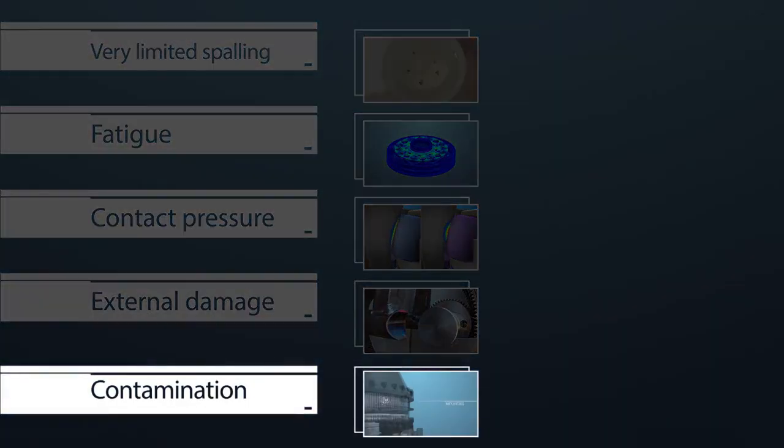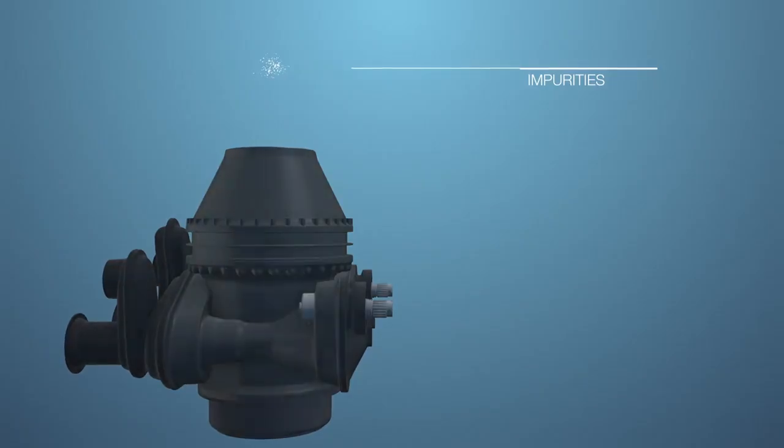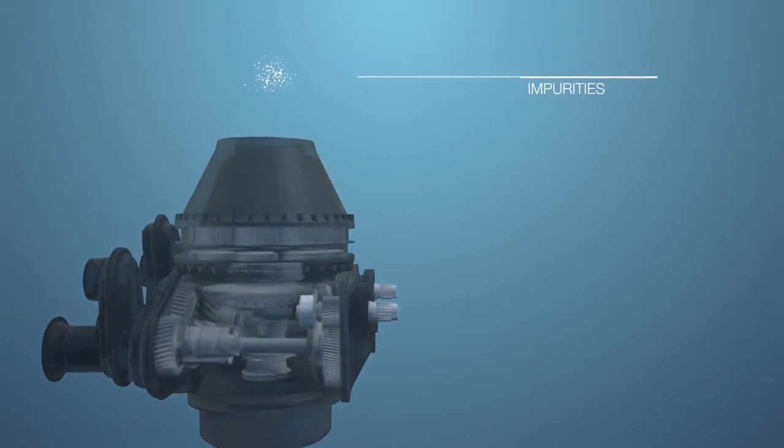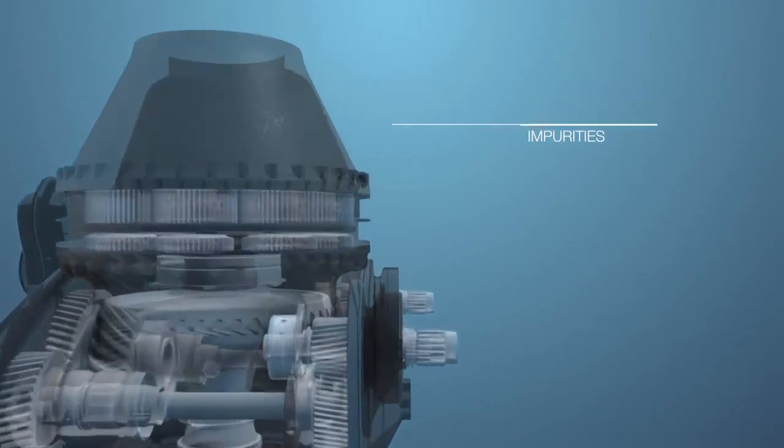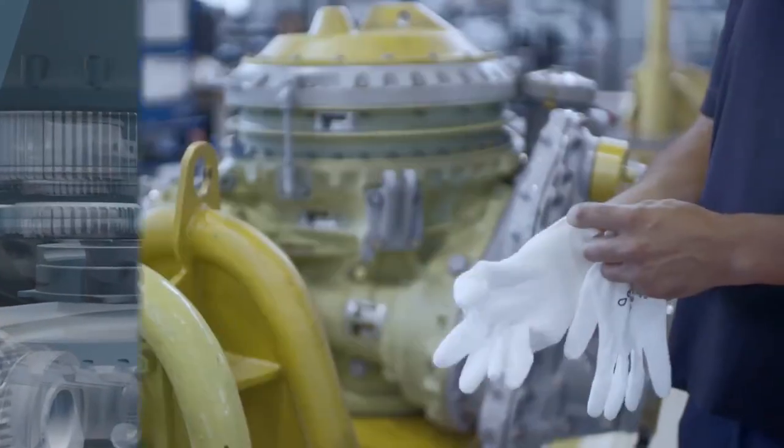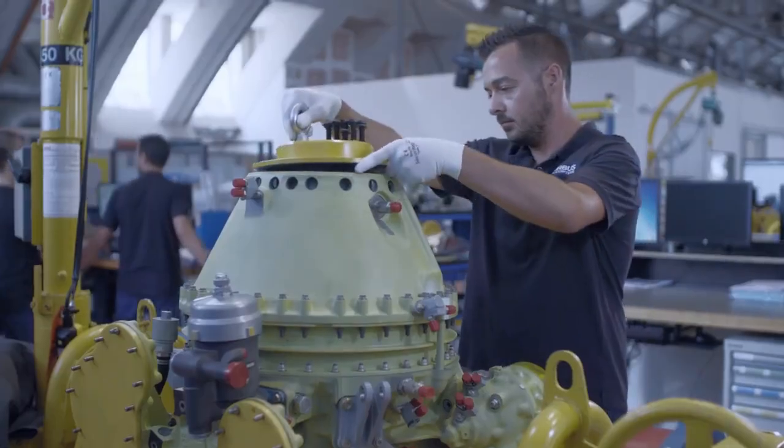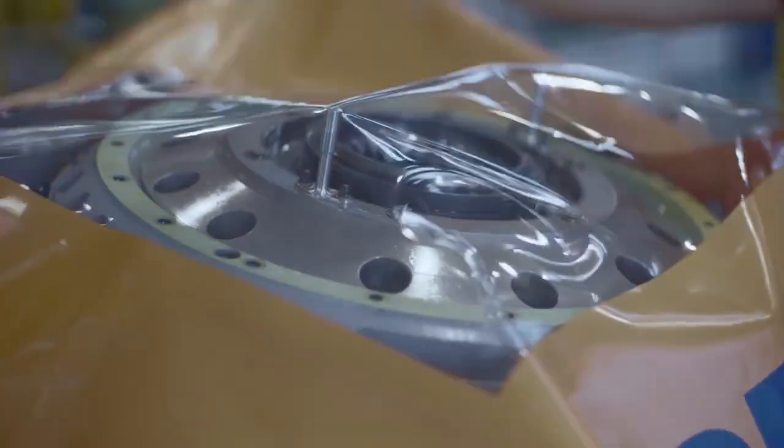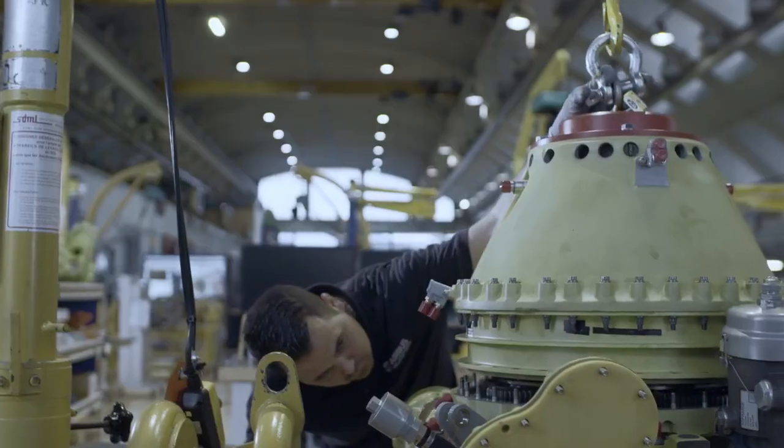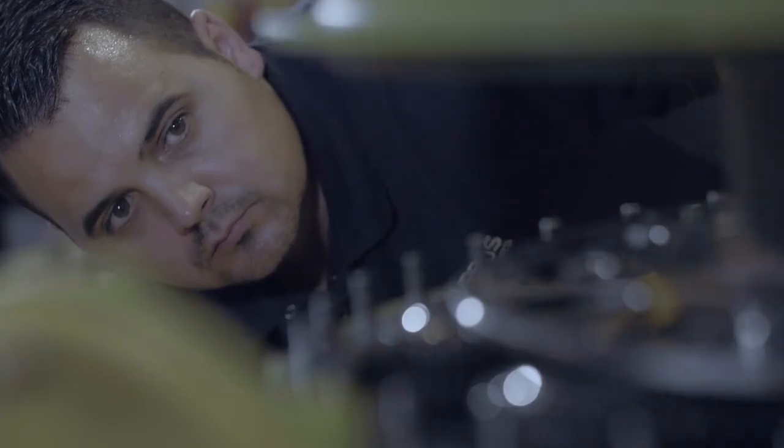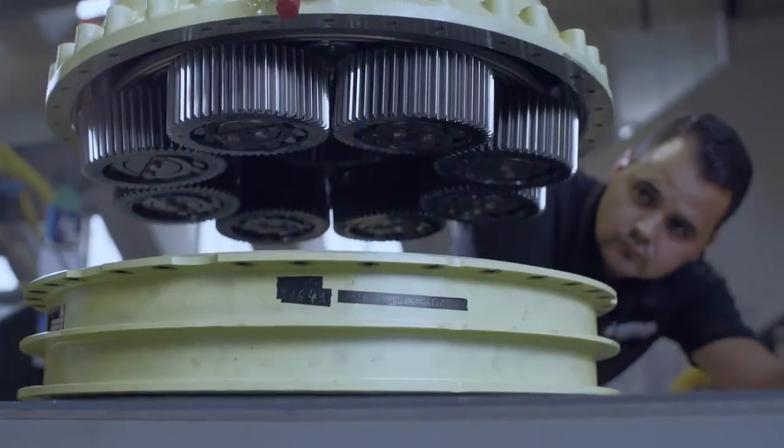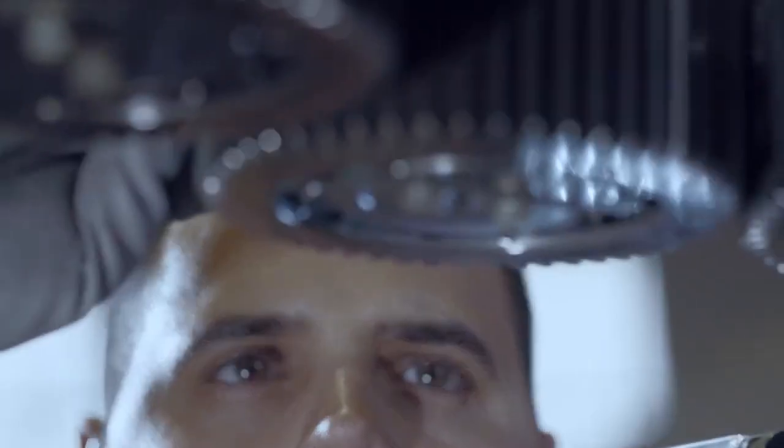The last potential contributing factor is a contamination by impurities finding their way into the main gearbox during maintenance, which then could have created damage in the planet gear leading to spalling. Additional measures have been put in place to protect the main gearbox during maintenance operations, and disassembly of main gearbox modules can now only be performed by an Airbus Helicopters certified maintenance or repair center.